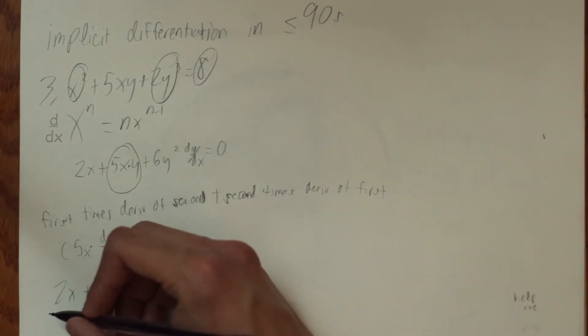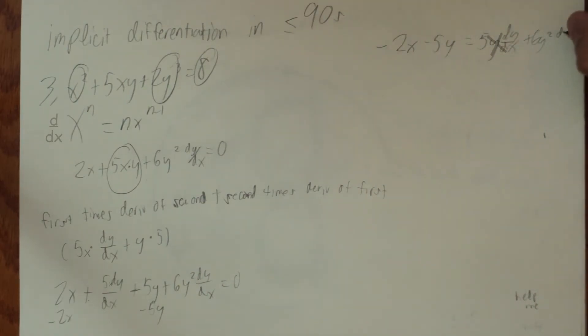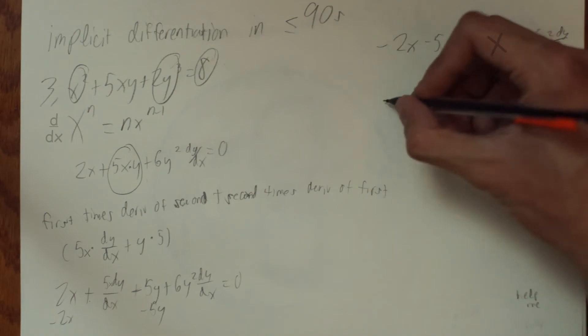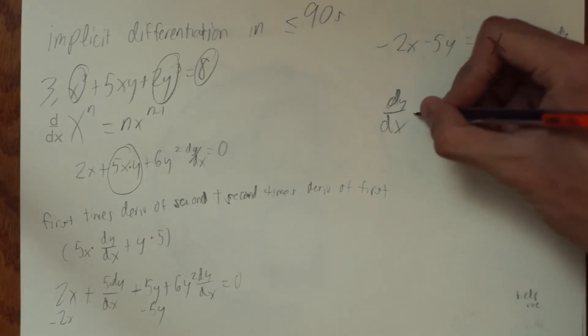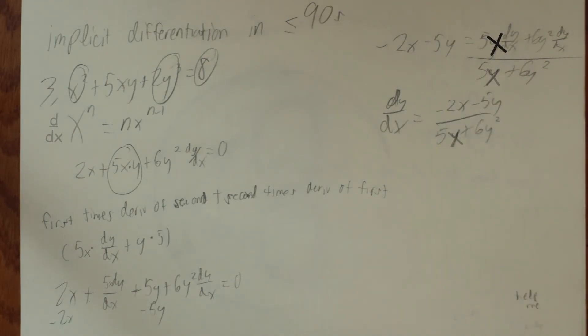Now, you must separate dy over dx from the terms. Subtract 2x and 5y to get negative 2x minus 5y. Divide by 5x and 6y squared to get the final answer. dy over dx equals negative 2x minus 5y over 5x plus 6y squared.